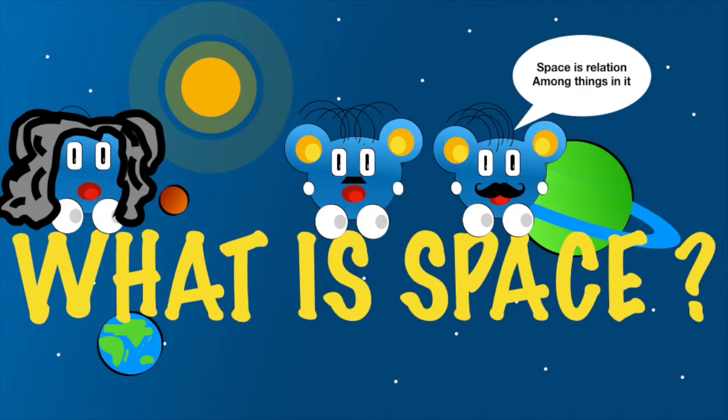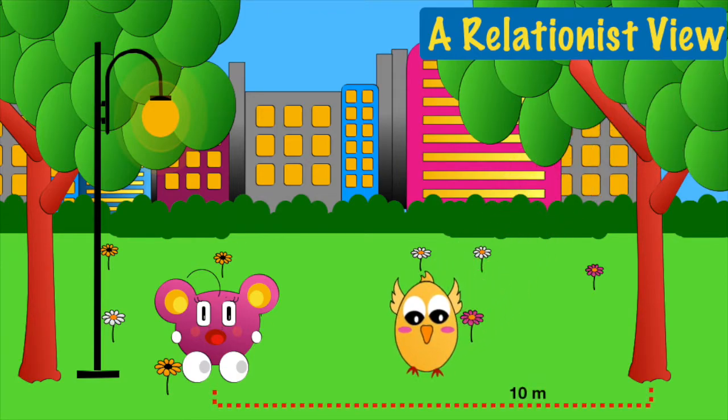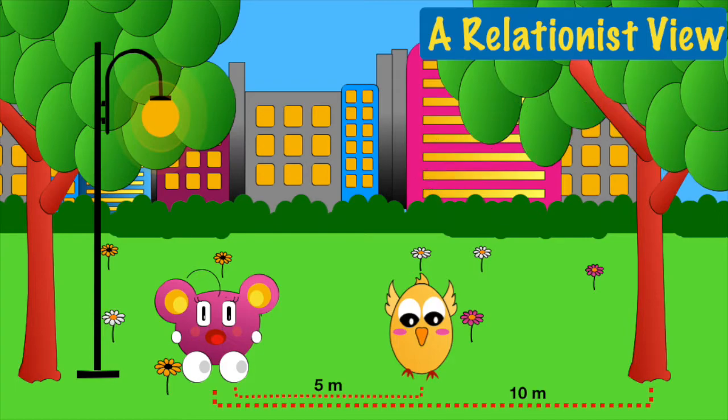Some said that space is just a relation among things in it. Suppose Alice is standing 10 meters away from the tree and 5 meters away from the bird. The space between these objects exists only because these objects exist there. Space is just a relation among these things and not an independent entity.